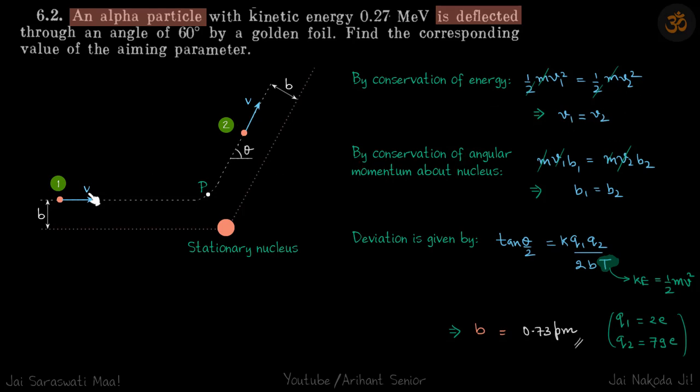Second, if we conserve angular momentum about the nucleus, we can see that all the forces on this alpha particle pass through this point. So the angular momentum with respect to this nucleus is conserved.